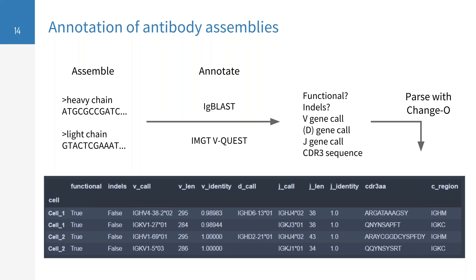Annotations that these tools add typically include whether the sequence is functional, whether it has any insertions or deletions, the V, D, and J gene calls for the sequence, as well as, for example, the CDR3. I use a tool called Change-O to parse the output of IgBLAST or IMGT, which yields a nice table where for each cell there is a heavy chain and a light chain, with annotations including V calls, D calls, J calls, sequence identity relative to germline, and other information such as the isotype.